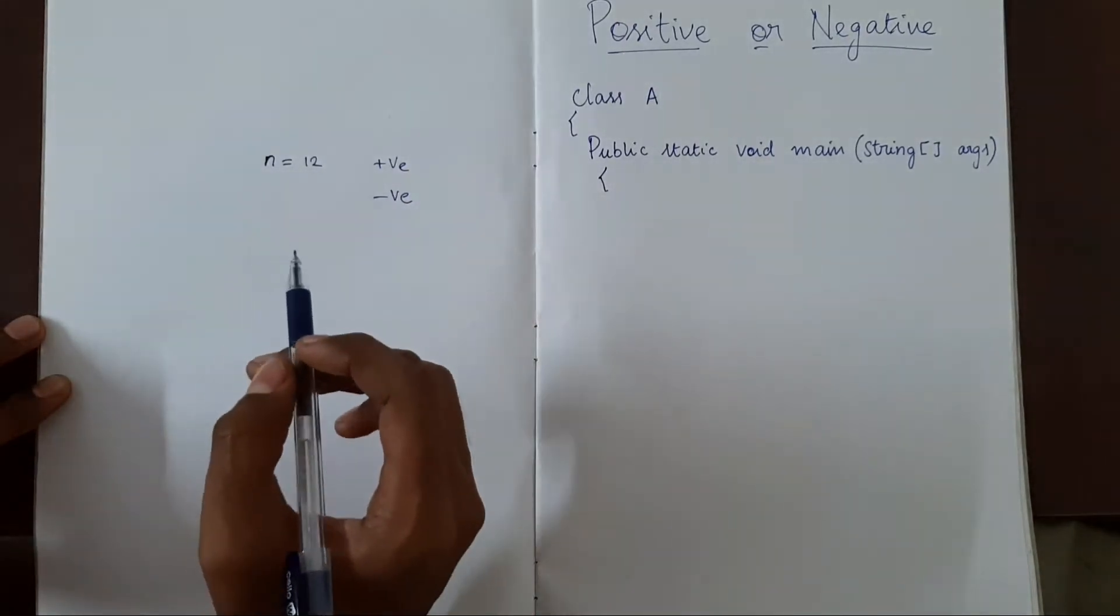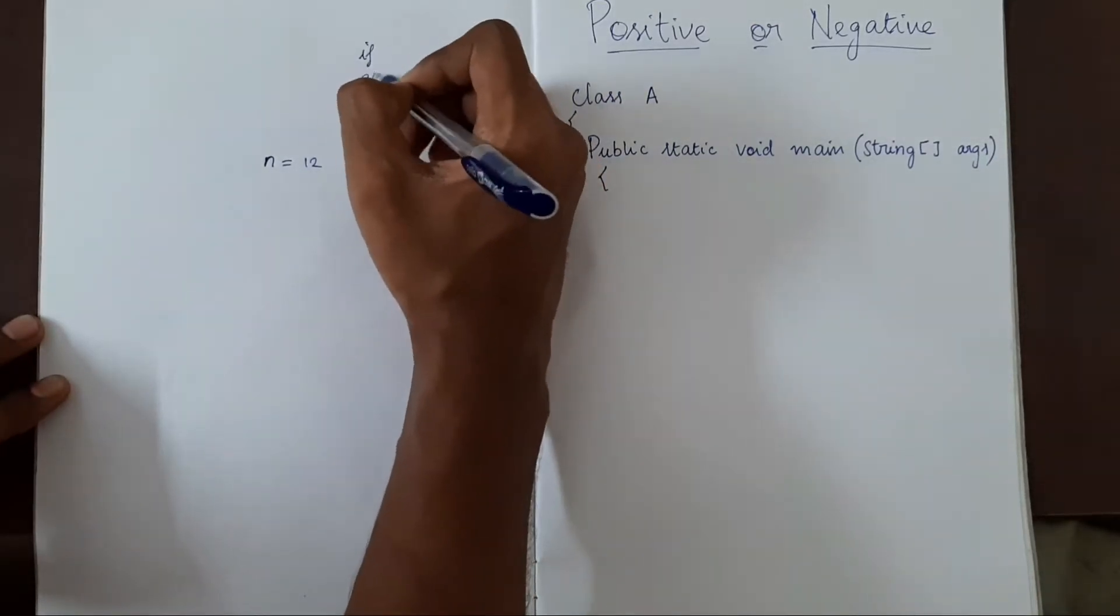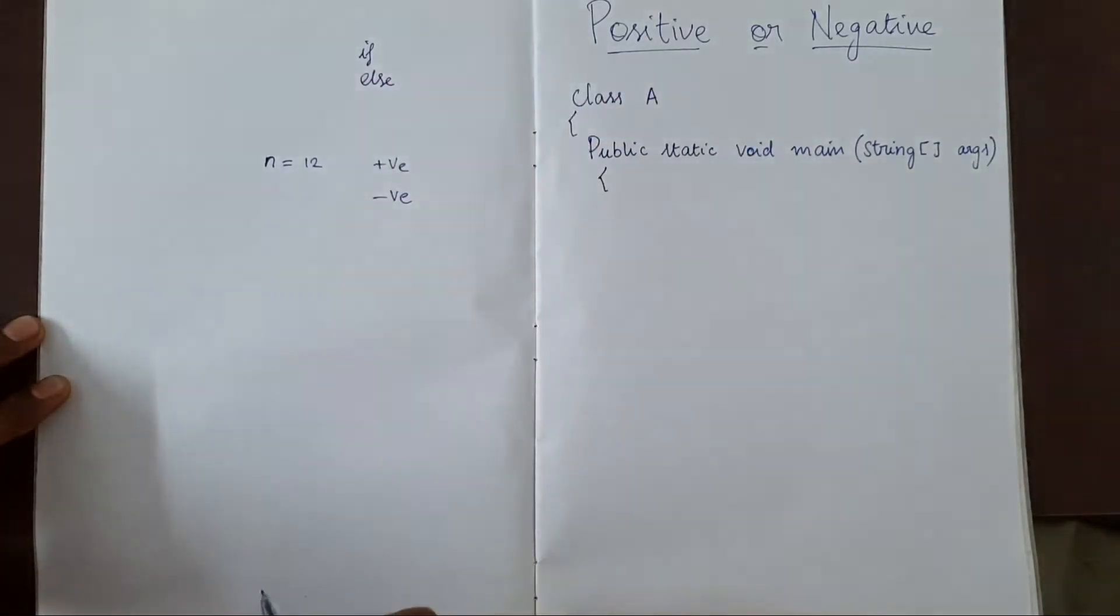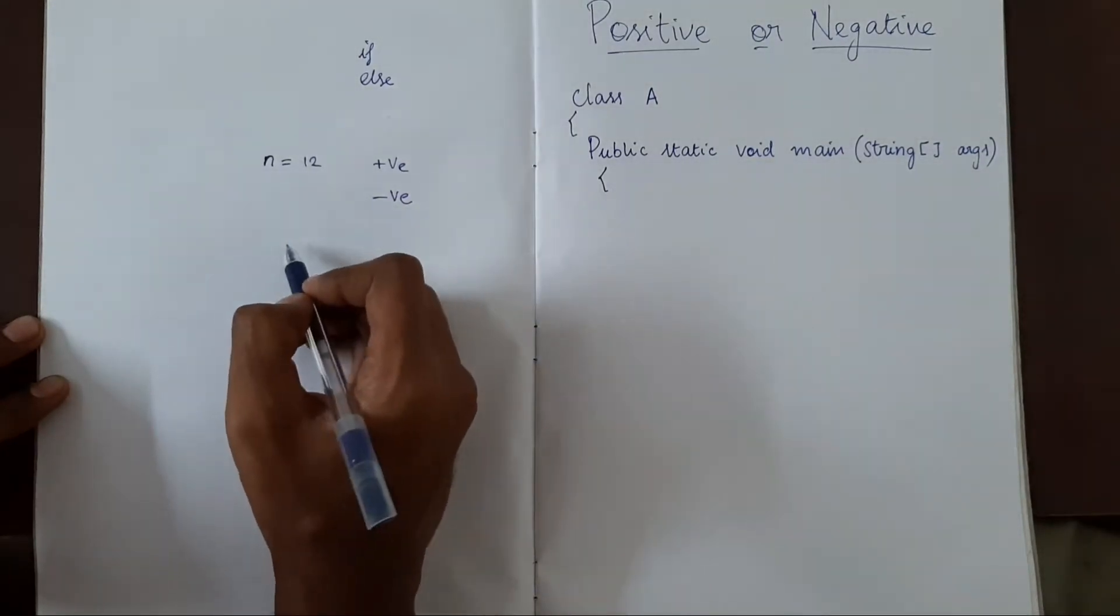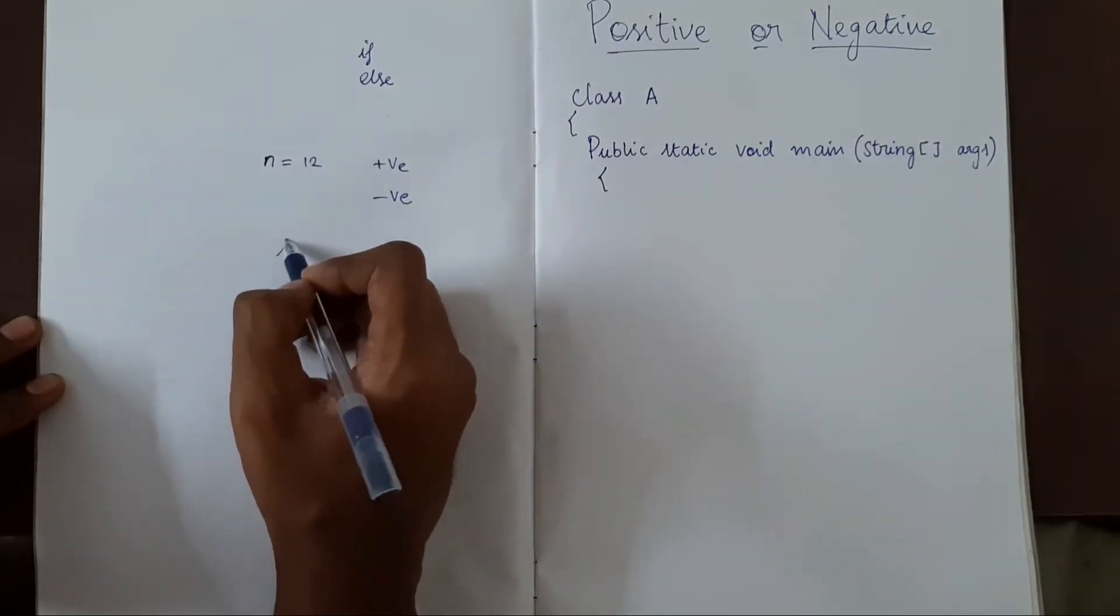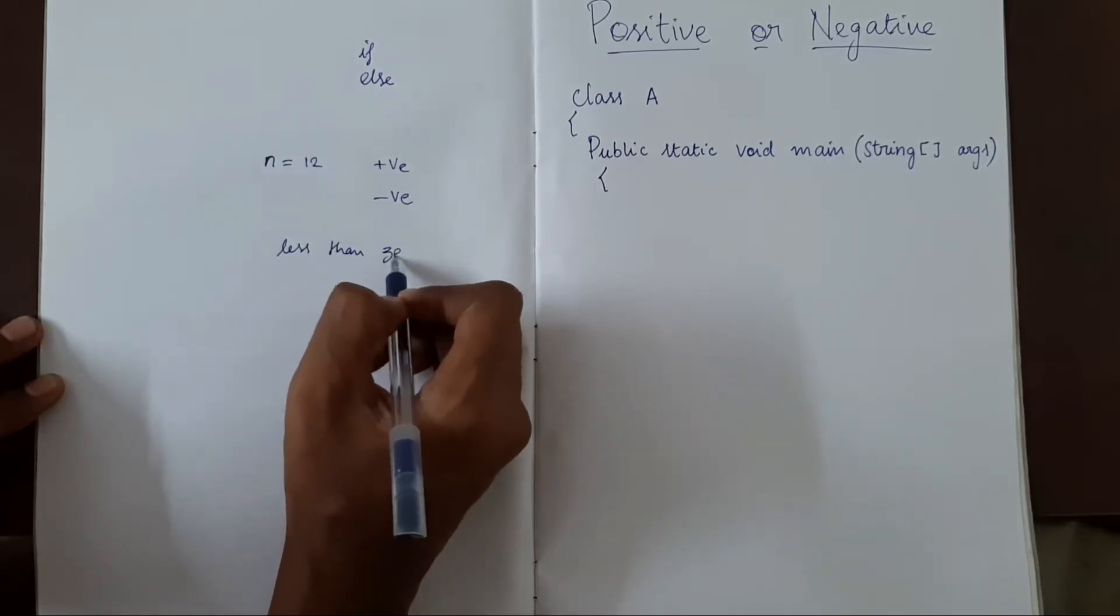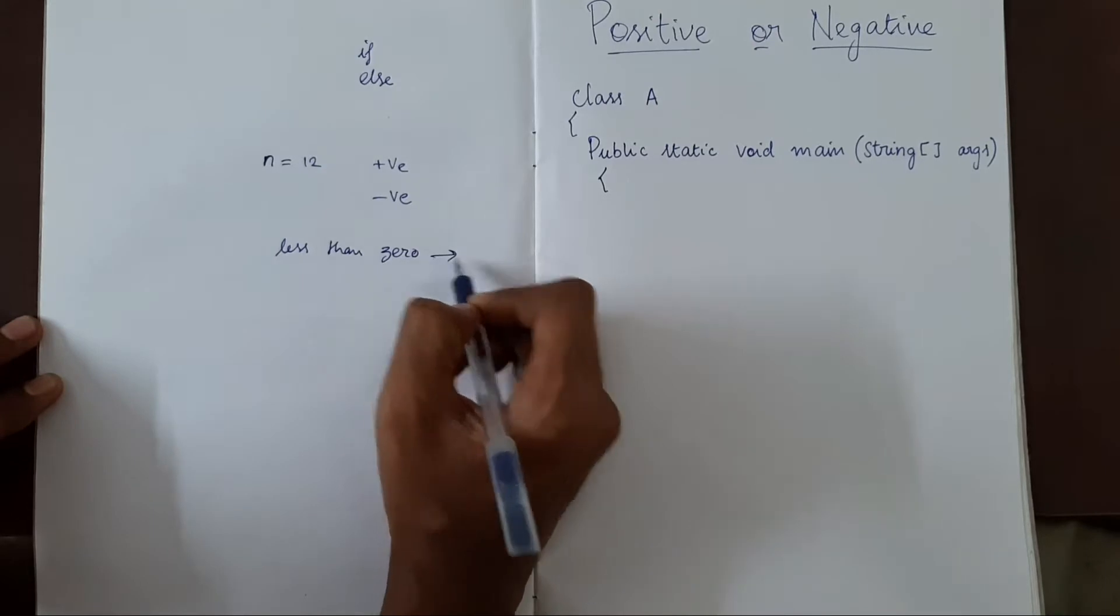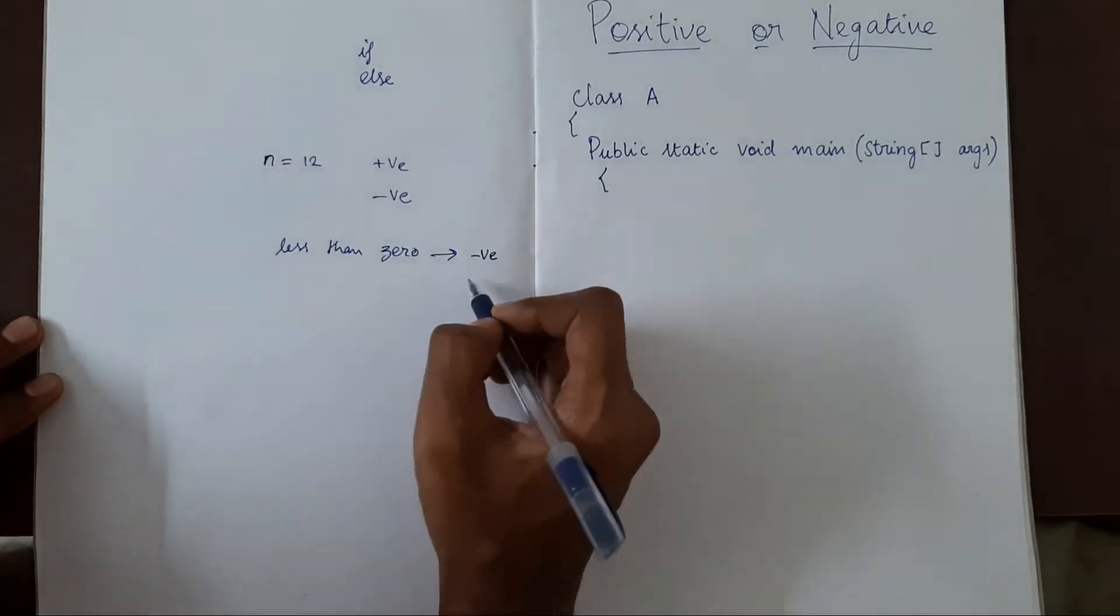The logic is very simple. First, I'll explain using if and else, then we'll move on to the next approach. Any number which is less than 0 is negative, and all the others are positive.